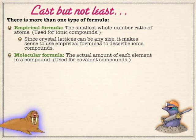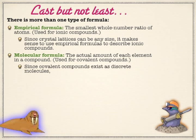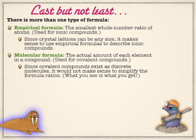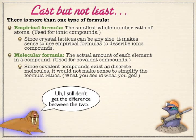But for covalent compounds, since each molecule is discrete, you can actually wind up with ratios of elements that are not reduced to the lowest ratio. An example of this is these three compounds right here.